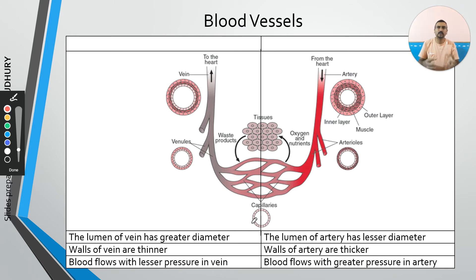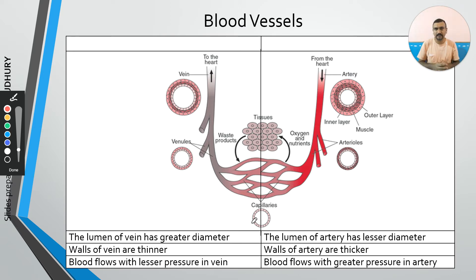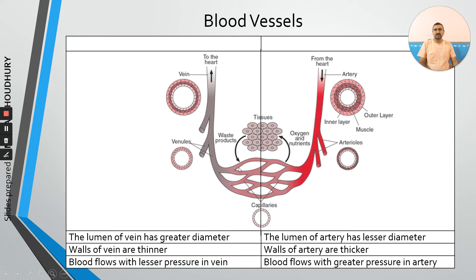When vessels reach the tissues, they branch out to form very thin capillaries, made up of only one layer of cells — just one cell thick. That covers the structure and function of blood vessels.